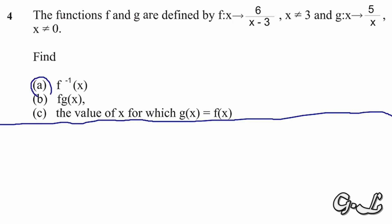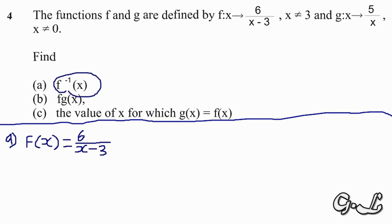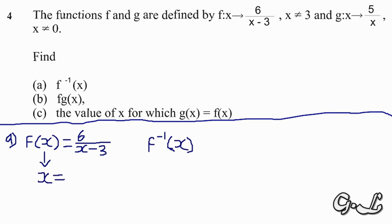We are starting with part a: find f inverse of x. We are given that f(x) = 6/(x − 3). To find f inverse of x, we use the method of replacing f(x) with x, and replacing x with y. So we write: x = 6/(y − 3).